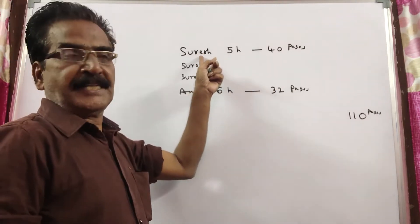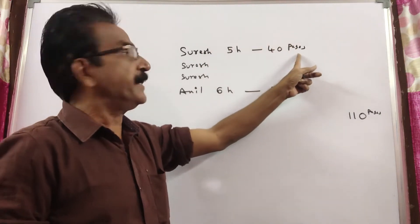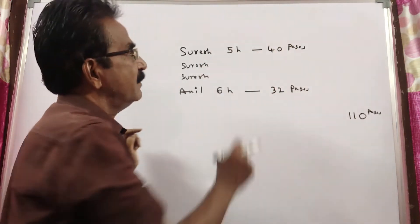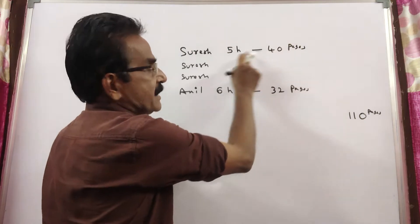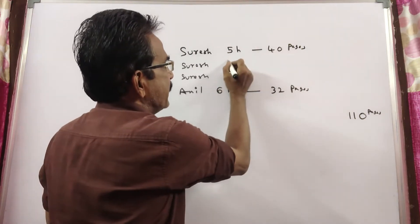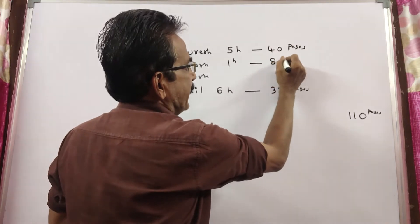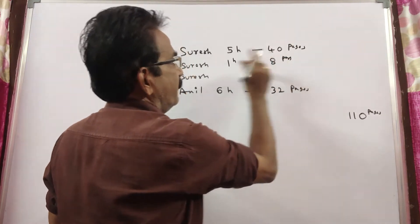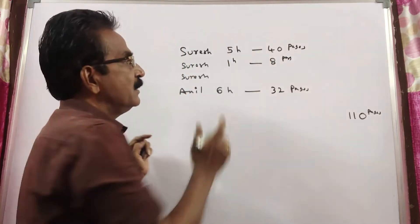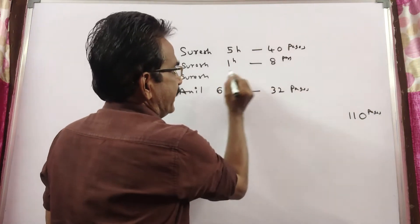Whereas Suresh can type 40 pages in 5 hours. 40 pages in 5 hours means in 1 hour, Suresh can type 8 pages. 5×8 = 40. So 1 hour, 8 pages.